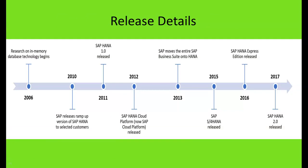Regarding release history: research on in-memory database technology began in 2006. In 2010, SAP released a ramp-up (beta) version of SAP HANA to selected customers. SAP officially launched SAP HANA 1.0 in 2011. SAP HANA Cloud Platform — now known as SAP Cloud Platform — was released in 2012. SAP moved to SAP Business Suite on SAP HANA in 2013. SAP S4 HANA was released in 2015, SAP HANA Express Edition in 2016, and SAP HANA 2.0 was released in 2017. These are very important dates.